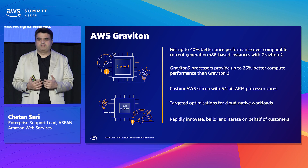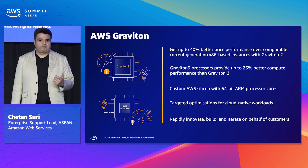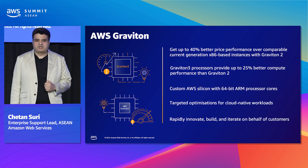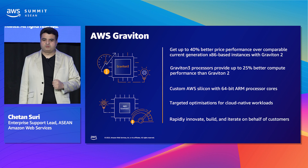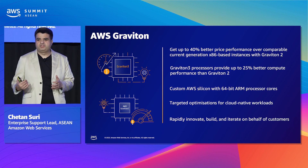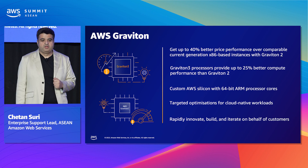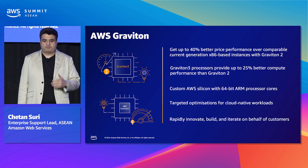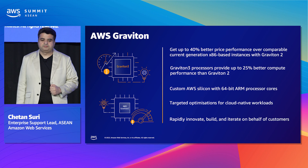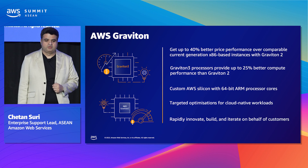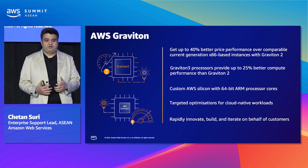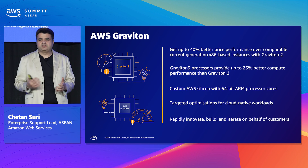You can use Graviton for a wide variety of workloads, including application servers, microservices, gaming, open source databases, and in-memory caches. One key feature is that every vCPU is a physical core, which means more isolation between vCPUs. With Graviton 3, we've enhanced the price performance benefits even further — up to 25% better compute performance than Graviton 2 — enabling you to run cloud-native applications more securely at scale.